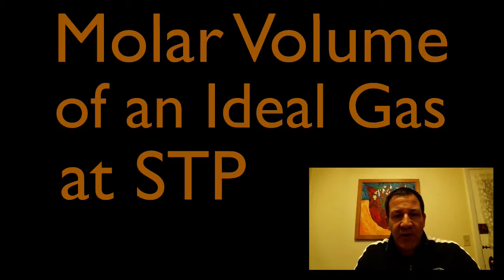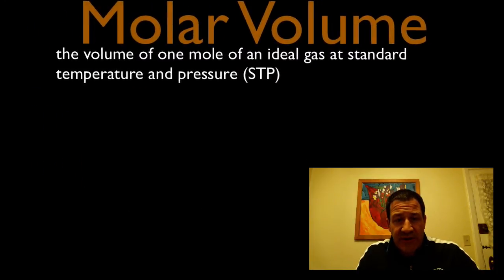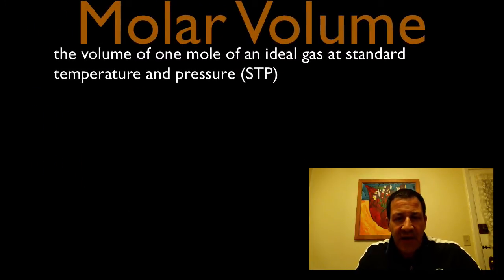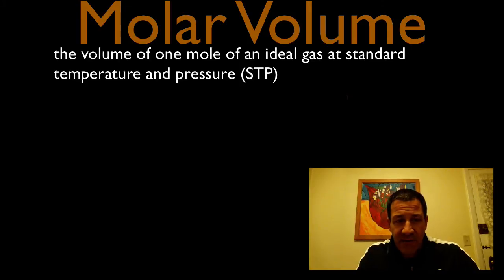In today's video, I'm going to show you how to calculate the molar volume of an ideal gas at standard temperature and pressure, STP. The definition of the molar volume is the volume of one mole of an ideal gas at standard temperature and pressure. Standard temperature and pressure means we're going to use the temperature as either 0 degrees Celsius or 273 Kelvin.